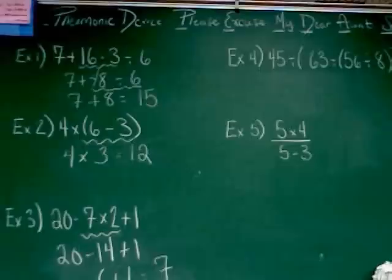Alright, let's go to example 4. Example 4 is a problem with nested parentheses, and I wanted to make sure I did one with you so you didn't think I was just making it up. You can see example 4 says 45 divided by parentheses, 63, divided by parentheses, 56, divided by 8, closed parentheses, closed parentheses. A lot of parentheses.